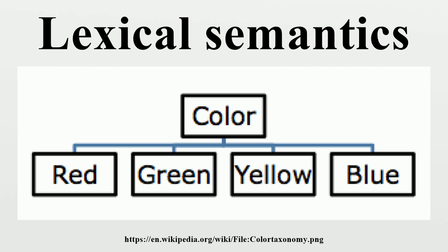Synonymy refers to words that are pronounced and spelled differently but contain the same meaning. Antonymy refers to words that are related by having the opposite meanings to each other. There are three types of antonyms: graded antonyms, complementary antonyms and relational antonyms. Homonymy refers to the relationship between words that are spelled or pronounced the same way but hold different meanings.